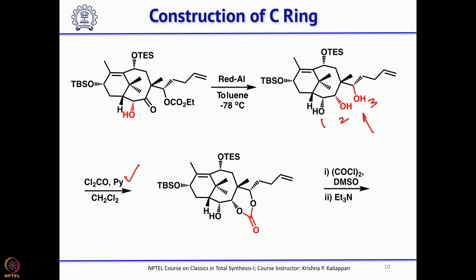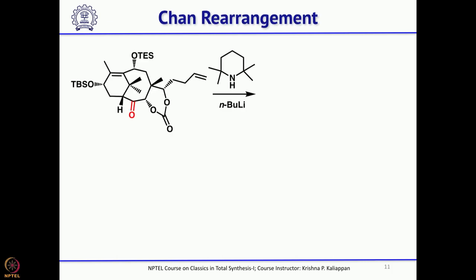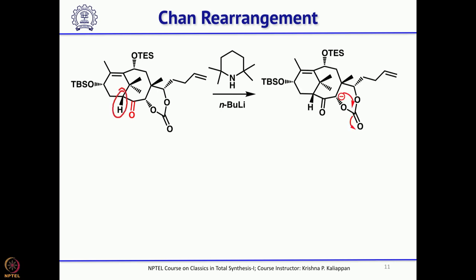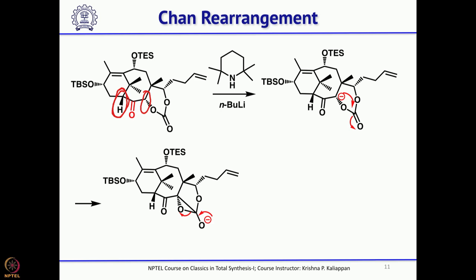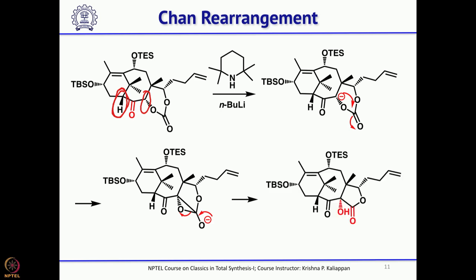The other secondary alcohol was easily oxidized under Swern conditions. Once you have the ketone, treat with tetramethylpiperidine and butyllithium — there are two possible positions to generate an anion. The anion is generated at the desired position and undergoes Chan rearrangement, giving a hydroxy-keto ester.